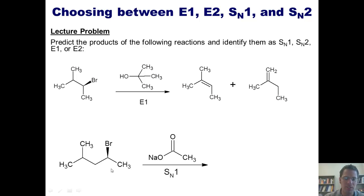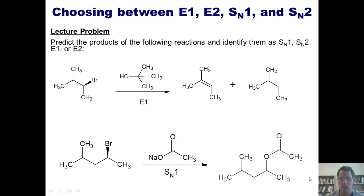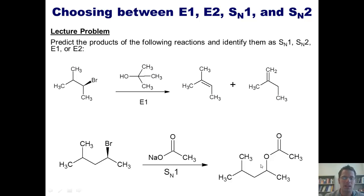The bromide takes off, giving me a secondary carbocation. There are no 1,2-shifts possible to improve the stability of that carbocation, so no 1,2-shifts will occur. The nucleophile comes in, forms a bond with that carbon, and gives me this product. Because this proceeds by an SN1 mechanism, the nucleophile can form a bond with that carbon from both the front and the back, giving me a mixture of both stereoisomers at that stereocenter.